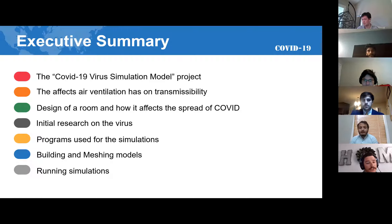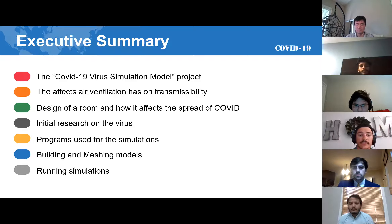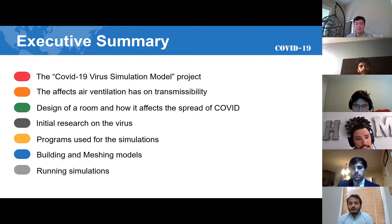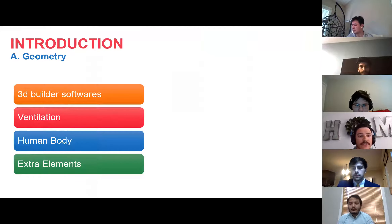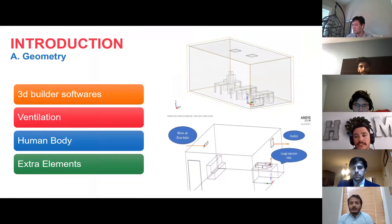Building and meshing models is a huge part of the simulation process. The idea is to build models as realistic as possible — building and meshing them properly and accurately so the results are as close to reality as possible. Last is running simulations, which is the most important part, putting everything together and going through the process to get the results.